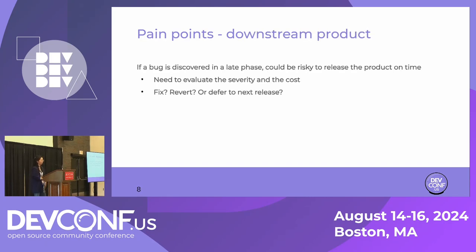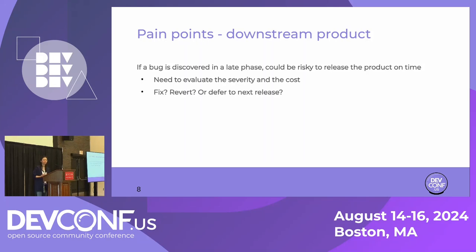For downstream products, there are also pain points. They usually have a very strict release schedule, and if a bug is discovered in a later phase, it could be very risky to release the product on time. We need to evaluate the severity and cost and decide whether to fix it, revert the patches, or defer to the next release — which could be unfriendly to customers. Given all these pain points, we decided to change our test strategy from testing downstream only to also testing upstream patches.